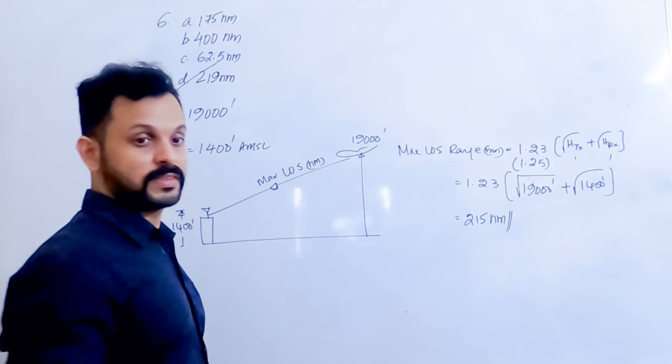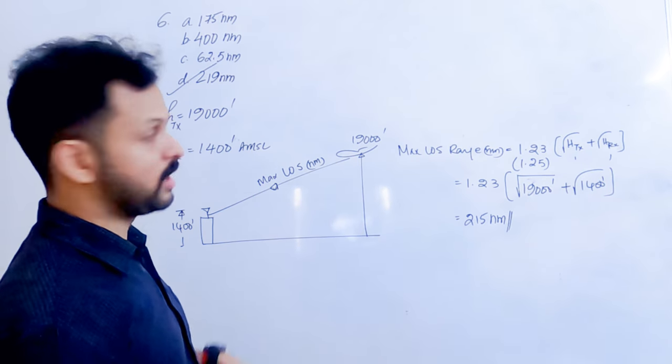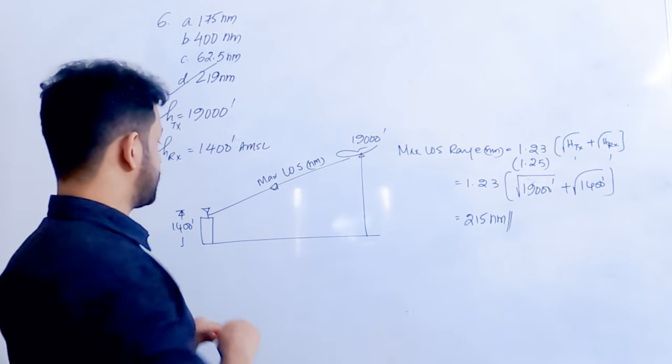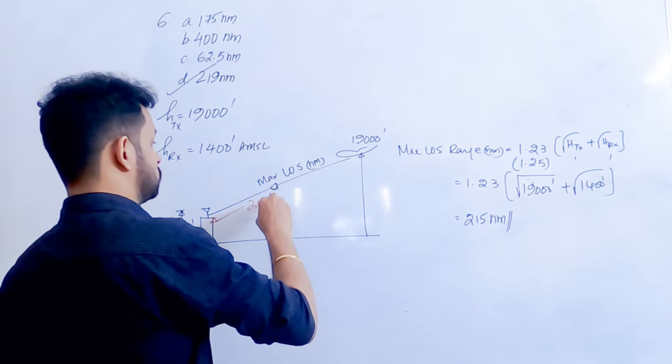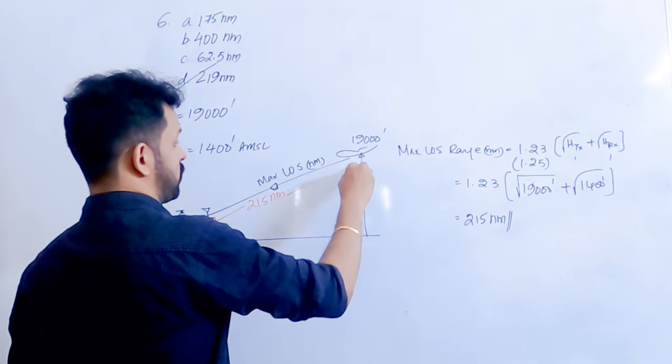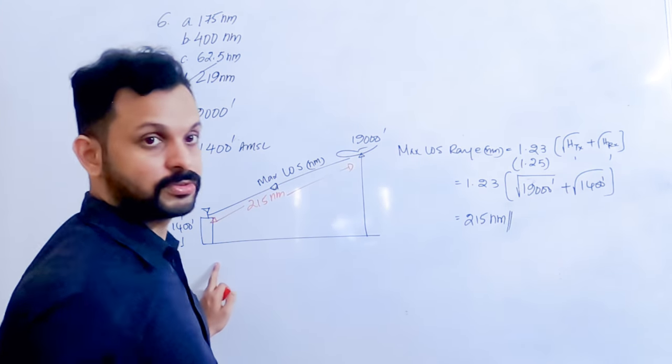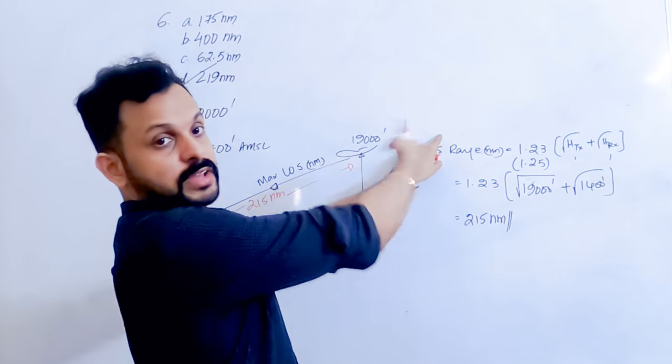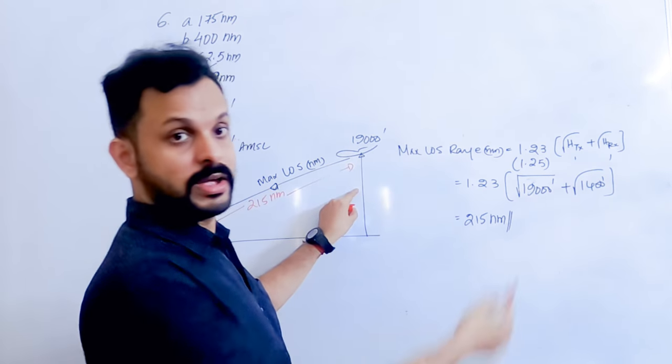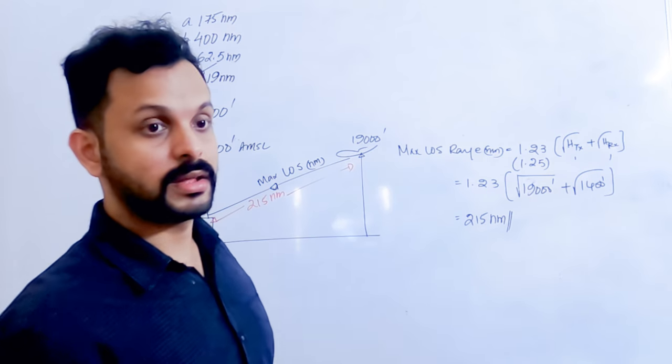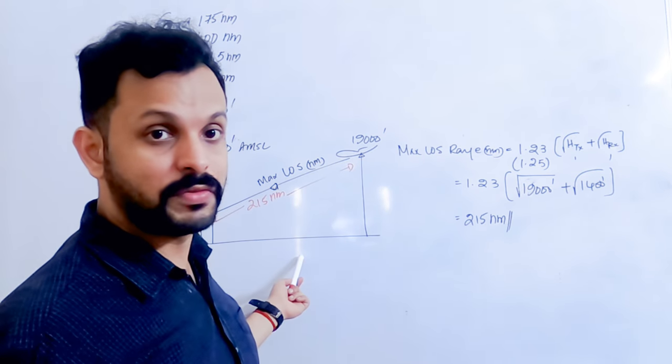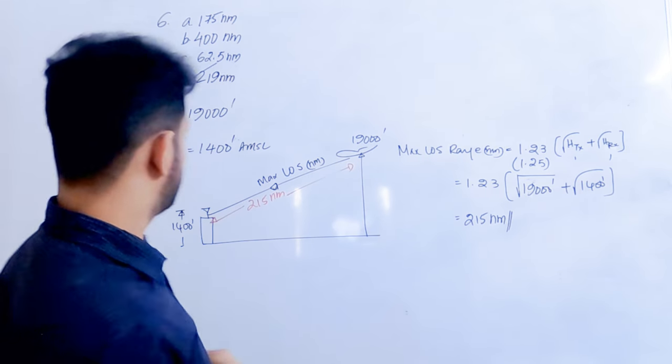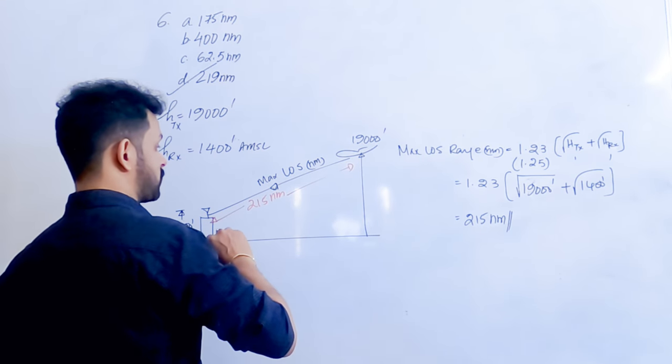But why is the aircraft at its maximum range here? You might think if I place the aircraft here it is in line of sight, or if I place the aircraft here it is still line of sight. Don't think like that, because we are ignoring the curvature of the earth here. Over 250 nautical miles, the earth is not flat, so the earth is actually going to be like this.